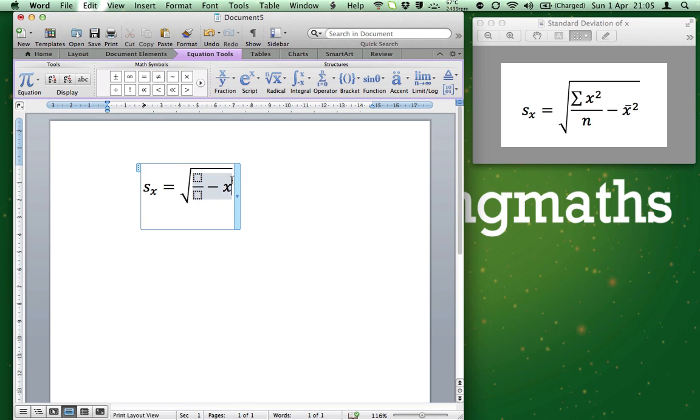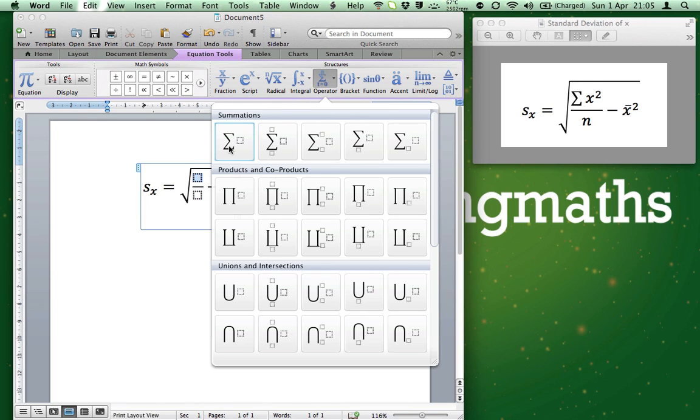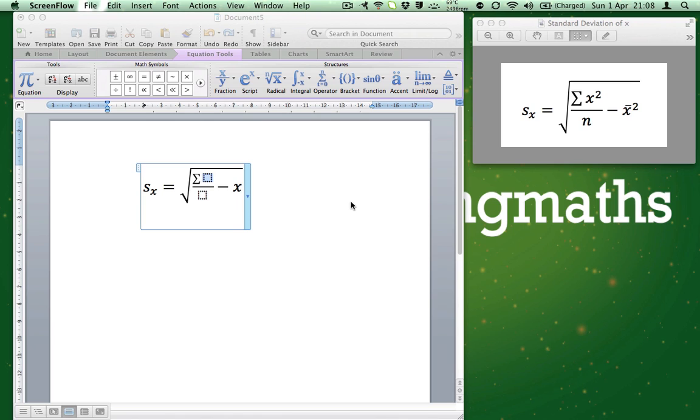Click the dotted box on the top of the fraction. Then click the operator icon and choose the first one. This inserts the sum symbol in the equation. Now click the box beside it.